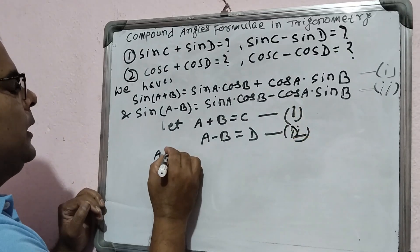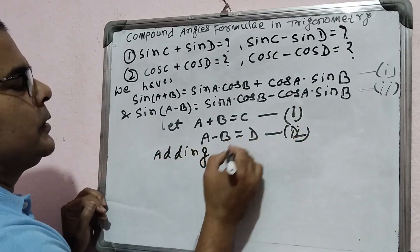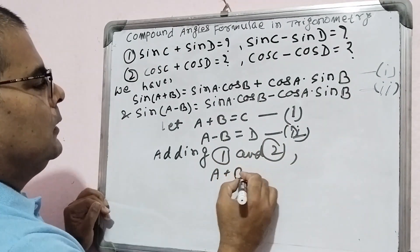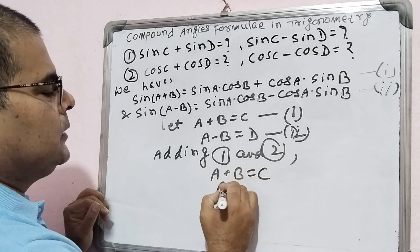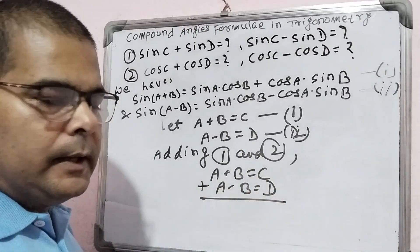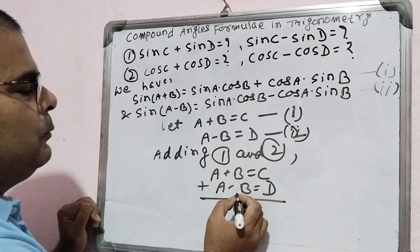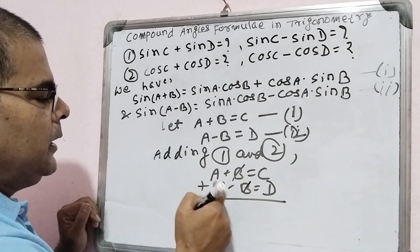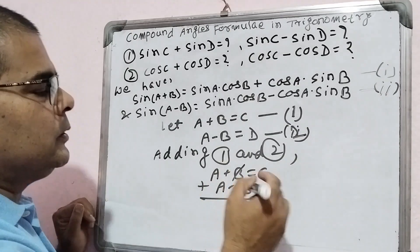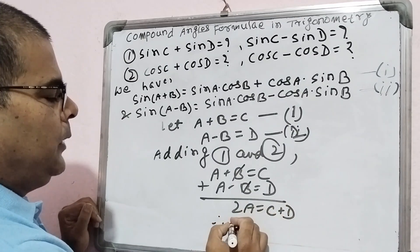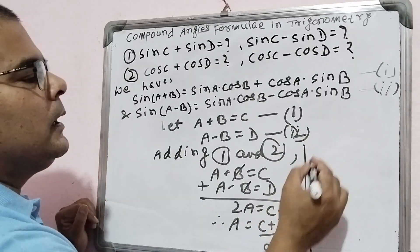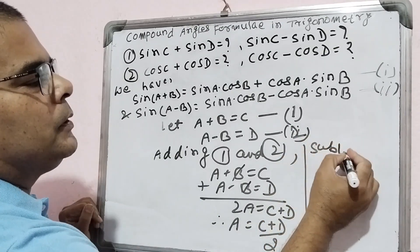Adding equations one and two: we have a plus b equals C and a minus b equals D. Adding them, the plus b and minus b cancel out, leaving 2a equals C plus D. Therefore, a equals (C plus D) by 2.